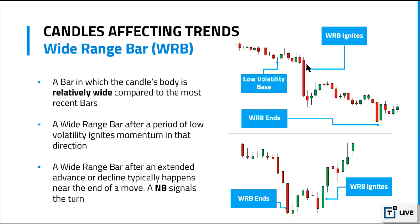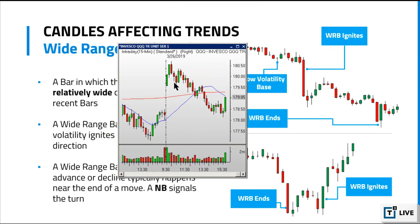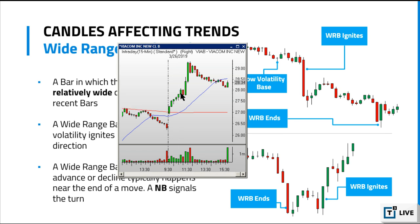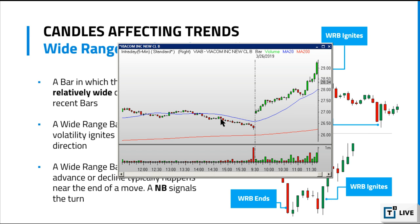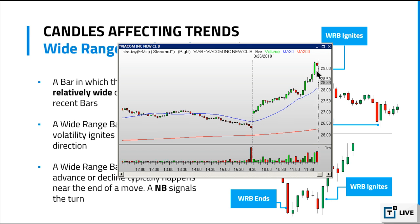A wide range bar after an extended sell-off or advance typically happens near the end of the move, because the wide range bar signals exhaustion — it signals the panic. Why do we get a wide range bar after multiple red bars in a row? Because people are panicking out of the trade. Why do we get a wide range bar after a stock is up a lot? Because people can't take the pain of not being in it anymore and so they jump in. For example, we had a few climber plays today, and I personally did VIAB.